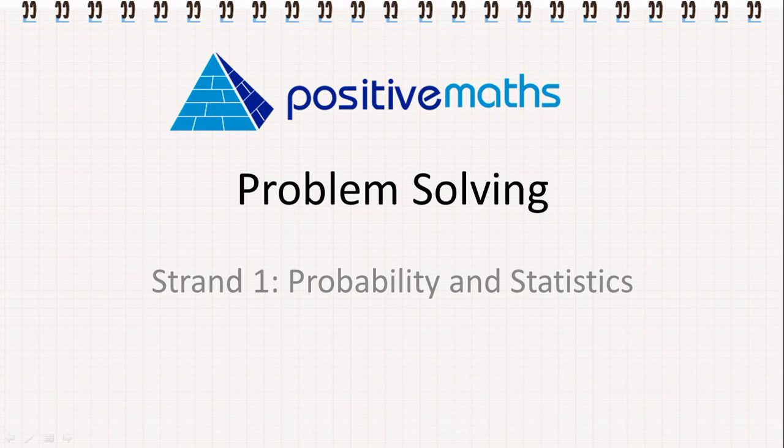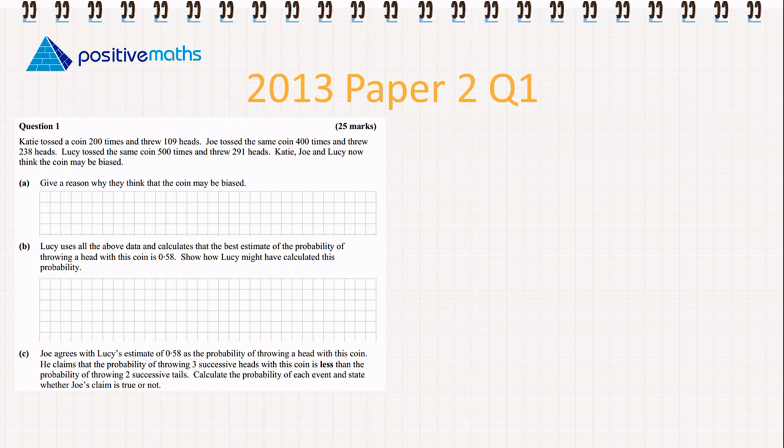In this video for Positive Maths, we're going to look at an exam question for Strand 1, probability and statistics. It's from the 2013 Paper 2, Question 1, for Leaving Cert Ordinary Level.